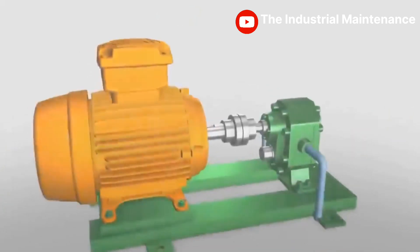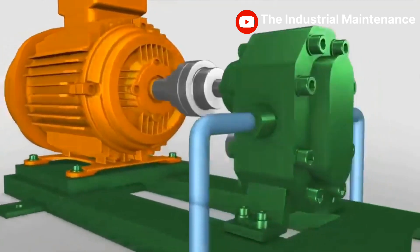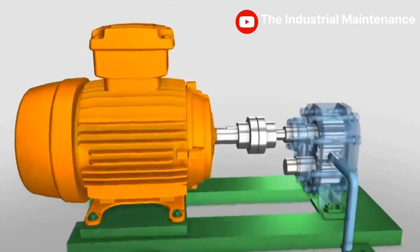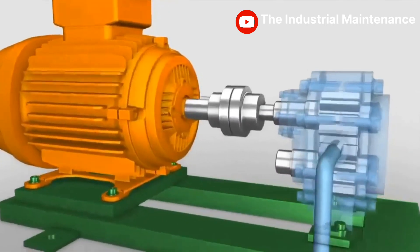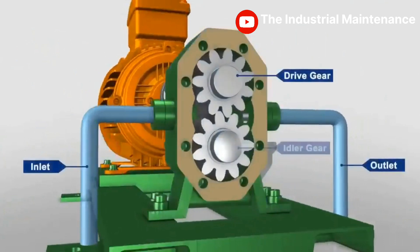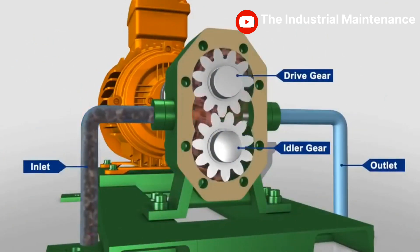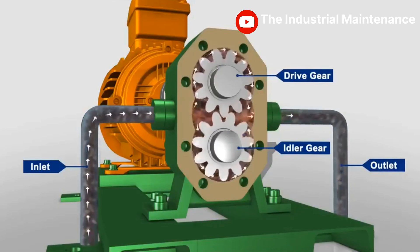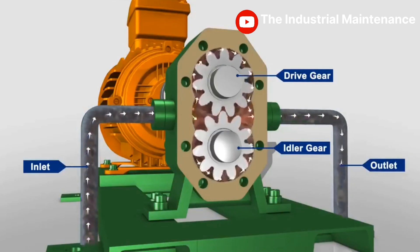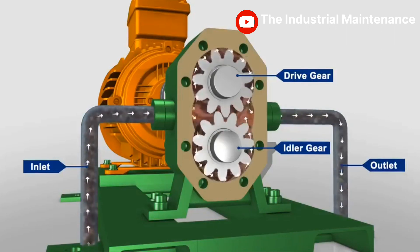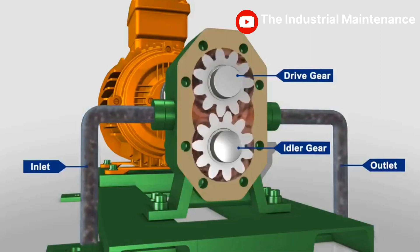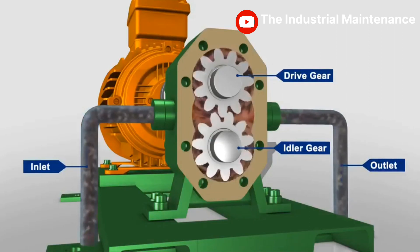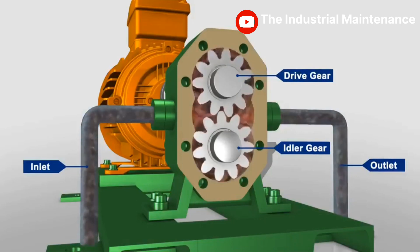The gear pump is so named because it has two gears that are side by side, or external to each other. A drive gear, driven by a motor, rotates an idler gear in the opposite direction. When the gears rotate, the liquid trapped in the gear teeth spaces between the housing bore and the outside of the gears is transferred from the inlet side to the outlet side. The meshing of the gears on the discharge side pushes the liquid out of the pump and into the discharge piping.